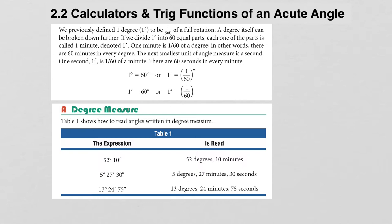Just to make sure we have a baseline understanding: an angle that is 1 minute or 1 second is a tiny angle — because even 1 degree is a tiny angle. In fact, angles of 1 minute or 1 second are so small that you wouldn't even be able to see them if you tried to graph them. This is a way of getting very precise measurements.